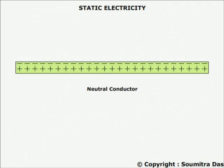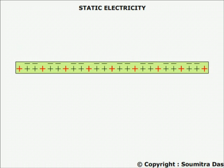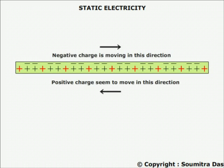The negative charge is due to extra electrons and can move in a conductor. Positive charge is created due to loss of electrons and is in the nucleus, which cannot move. When the electrons move, the positive charge in the nucleus seems to move.